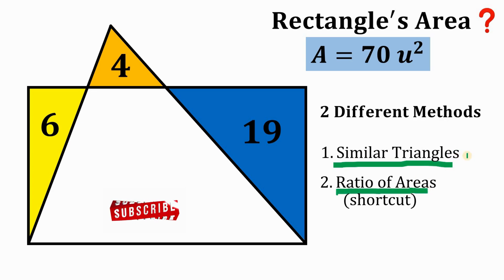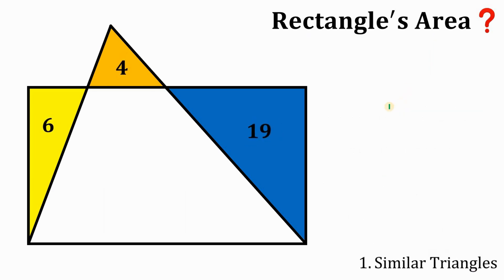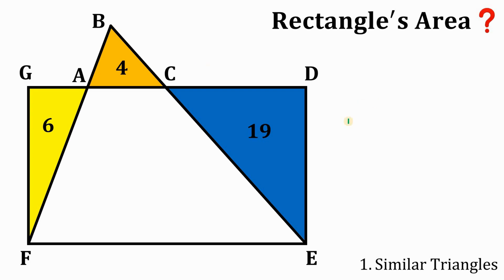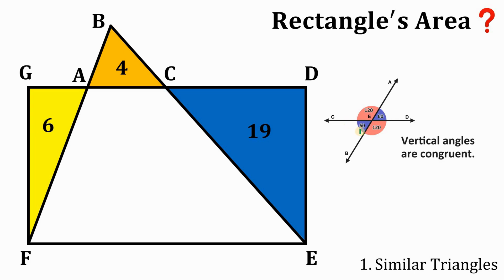Let's begin with the similar triangles method to show how we get 70 square units. Before we begin, let's name some important points. We're going to use vertical angles, because vertical angles are congruent. These two angles we can call alpha, because they are equal and congruent. And these two vertical angles we can call beta.